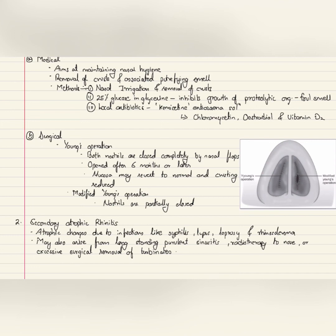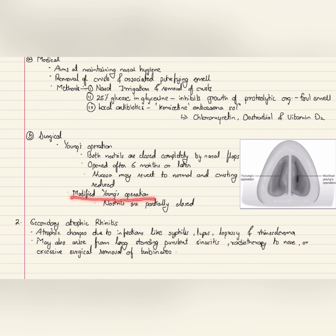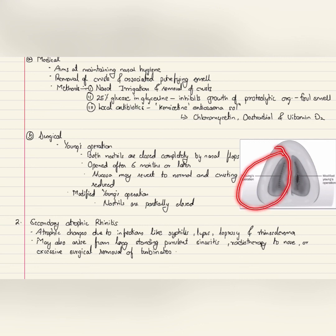Under surgical treatment, we have Young's operation, where both nostrils are closed completely just within the nasal vestibule by raising nasal flaps. They are opened after six months or later; in these cases mucosa may revert to normal and crusting is reduced. Modified Young's operation aims to partially close the nostrils to avoid the discomfort of bilateral nasal obstruction, and is claimed to give the same benefit. In the photo shown, Young's operation has the nostrils completely closed by nasal flaps, whereas in modified Young's operation the nostrils are partially closed.